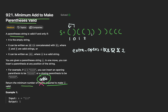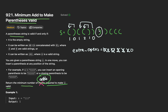A closing parenthesis then appears. We have two extra open parentheses, and one of them gets validated — it doesn't matter which one. We decrement our extra opens count to one. On the next iteration, another closing parenthesis appears for the last remaining open parenthesis, so we decrement to zero. Now we encounter yet another closing parenthesis, but we have zero extra open parentheses — there is no unmatched open parenthesis anywhere. We have no choice but to add an open parenthesis to compensate.